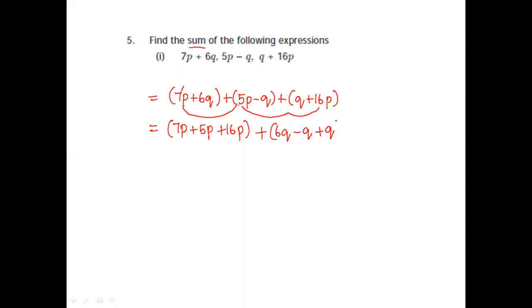Which is nothing but: 7 plus 5 is 12, 12 plus 16 is nothing but 28p. Plus, your q's get cancelled, which will come as 6q. So these are the answer.